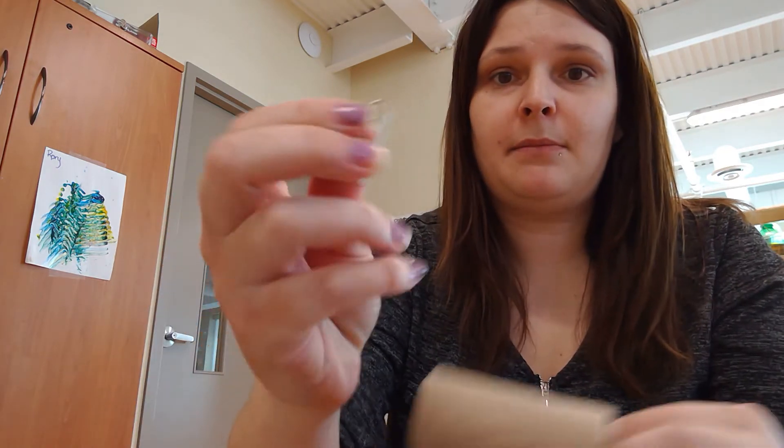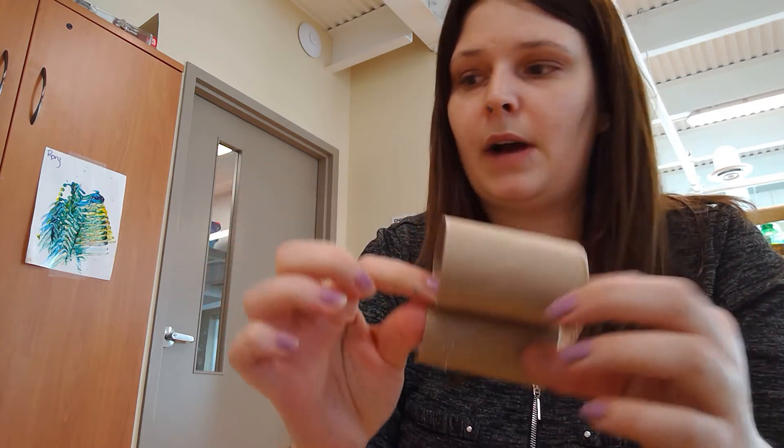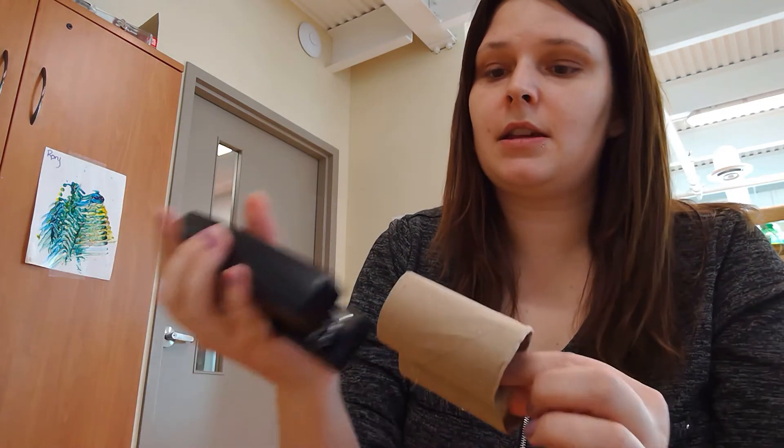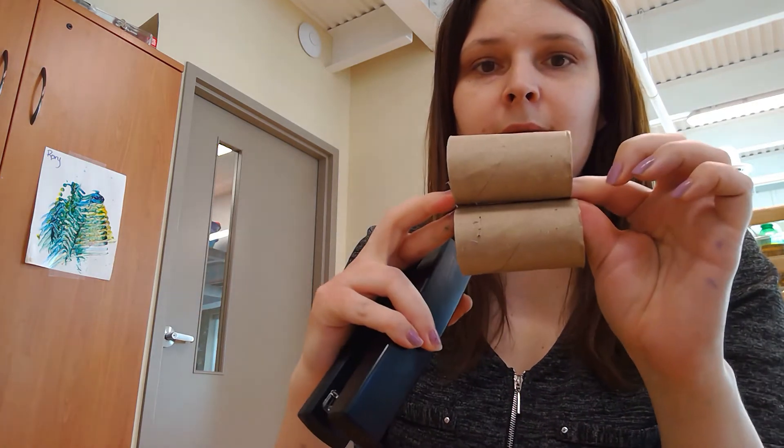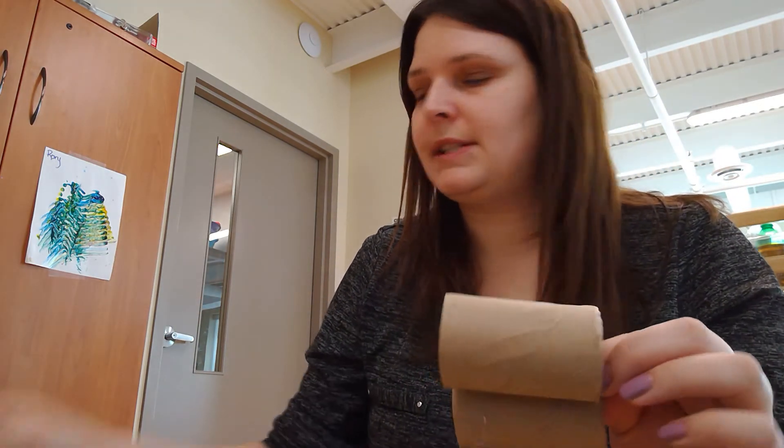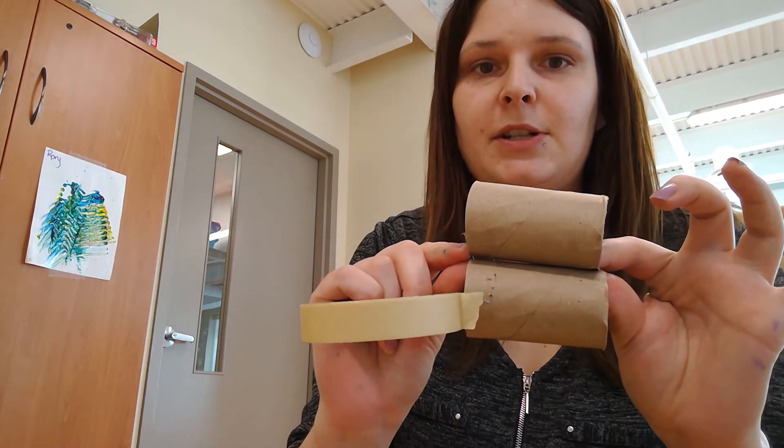You can use a paper clip and paper clip it together. It holds it pretty well. You can use a stapler and staple them together just like that. Or you can use tape and tape all the way around to keep both of the paper towel rolls together.